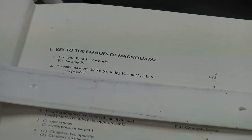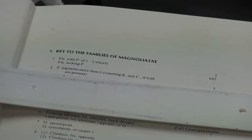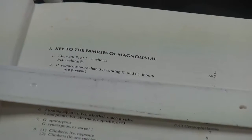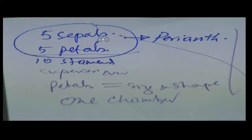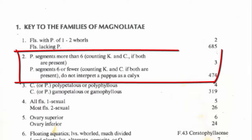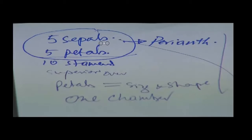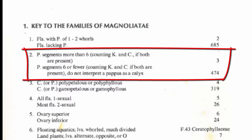Perianth segments — perianth means the sepals and the petals together, commonly known as perianth. The question is: perianth segments more than six. We have five plus five: five petals and five sepals equals ten. Ten is more than six, so we need to go to step three.